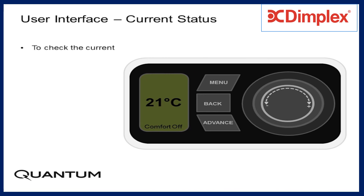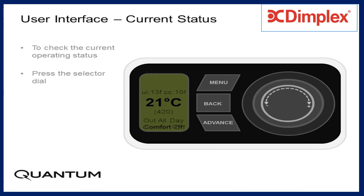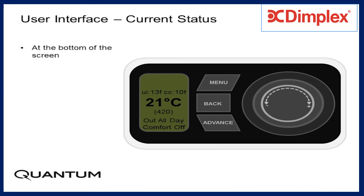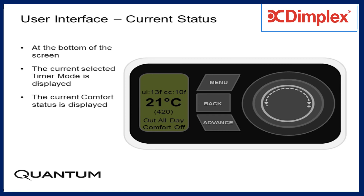To check the current operating status, press the selector dial. At the bottom of the screen, the current selected timer mode is displayed, and the current comfort status is also displayed.